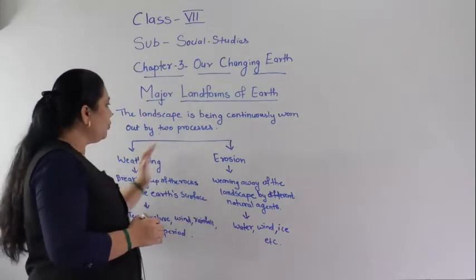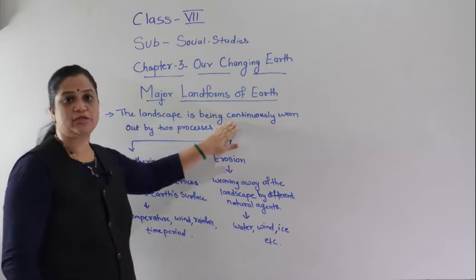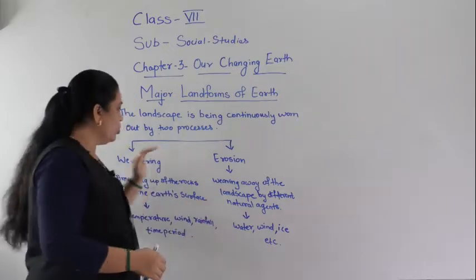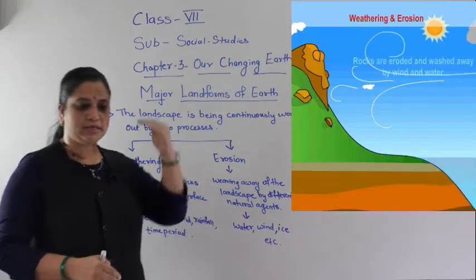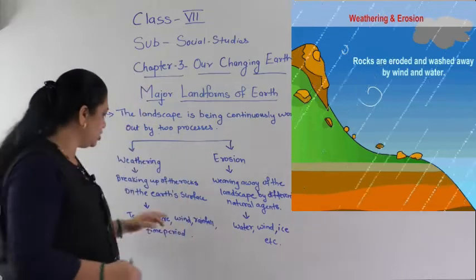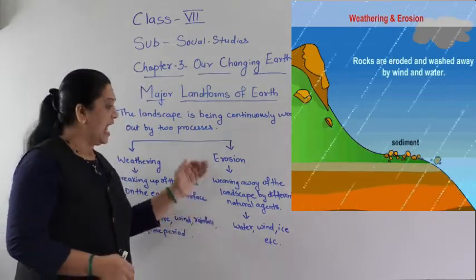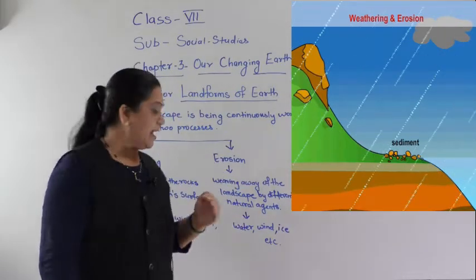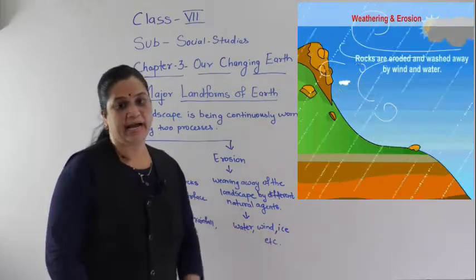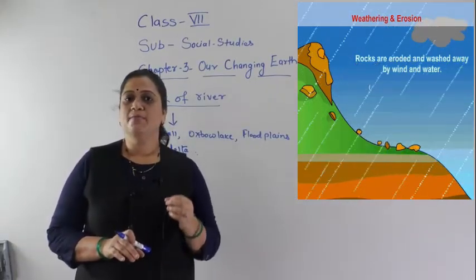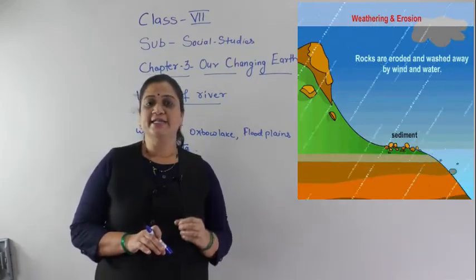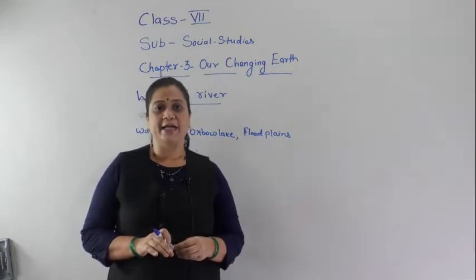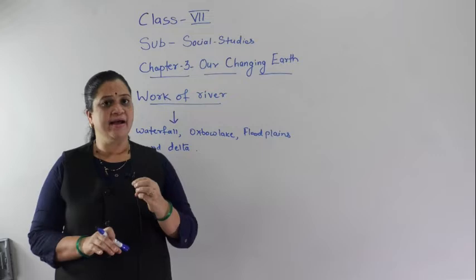These are the two processes which continuously take place on the earth's surface, because of which the landscape is worn out. Weathering is the process which breaks rocks by the action of wind, temperature, and rainfall, and erosion is the process which erodes material by the action of water, wind, and ice. Now, keeping in mind these two processes, let us see the changes on the earth's surface by the action of wind, water, and ice.